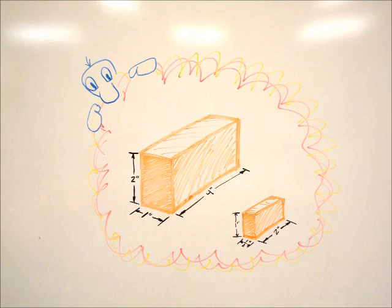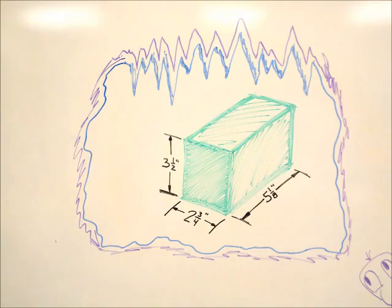But what if the numbers we're dealing with are not so friendly? This block measures 2 and 3 quarters of an inch by 5 and 1 eighth of an inch by 3 and a half inches. Now we have to find half of these measurements. This isn't as tough as it seems, and I'll show you my trick for figuring out what half of a measurement is when it includes a fraction.